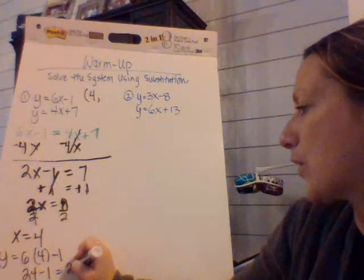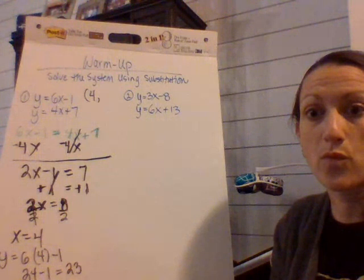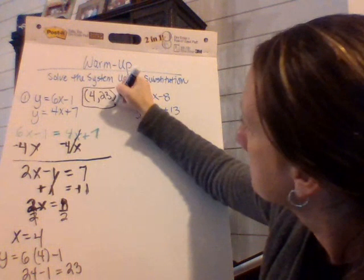So my final solution, which I want to write as a point, especially when I turn in my warm-up quiz, is going to be 4 comma 23. That's your first one.